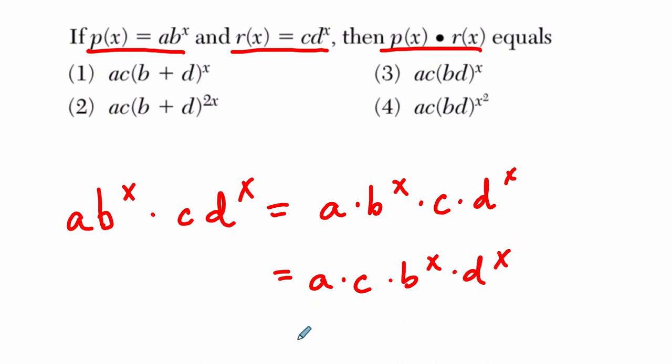And then I can see I have a times c in the front, which all the choices have here. All right, so I'm representing that. And then I have b to the x times d to the x. Now that's going to be equal to b times d to the x. And let's think about why that is.